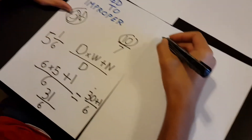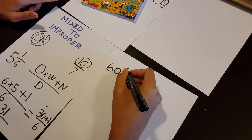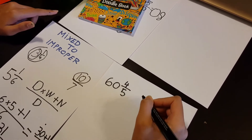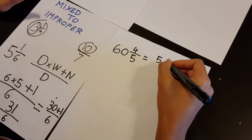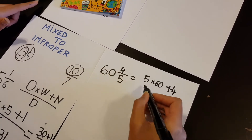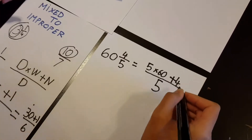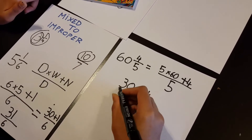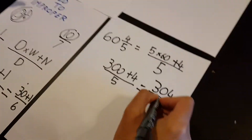Another example: suppose you have 60 and 4 over 5. To convert this into an improper fraction, multiply the denominator by the whole number and add the numerator, keeping the denominator the same. So 5 times 60 is 300, plus 4 divided by 5, which gives you 304 divided by 5.